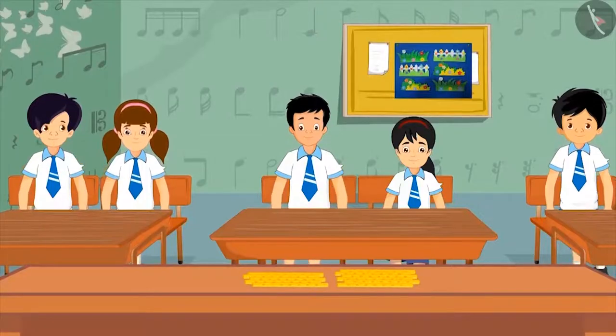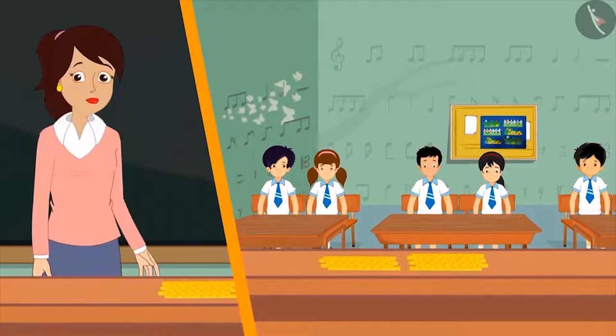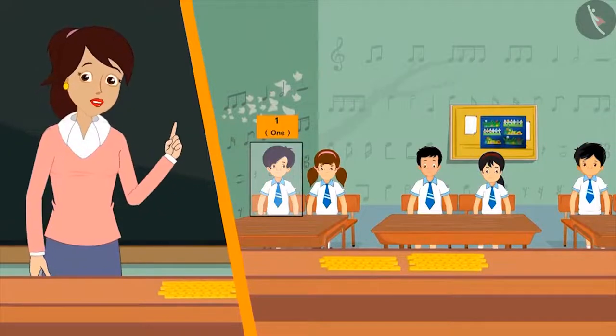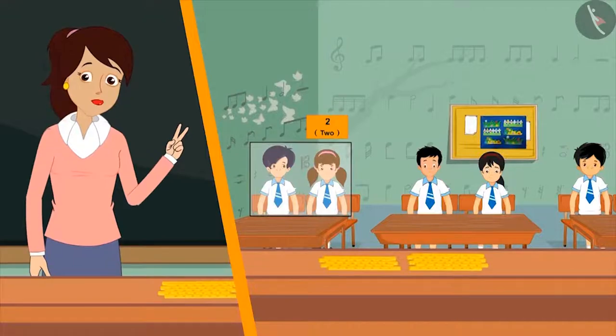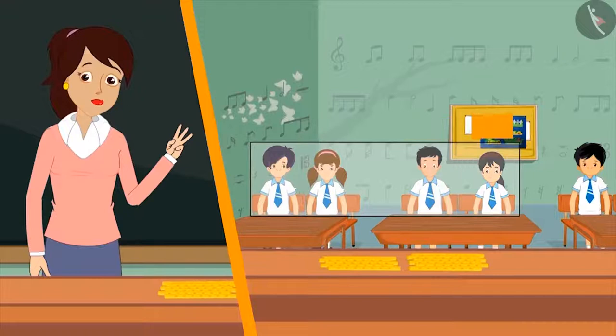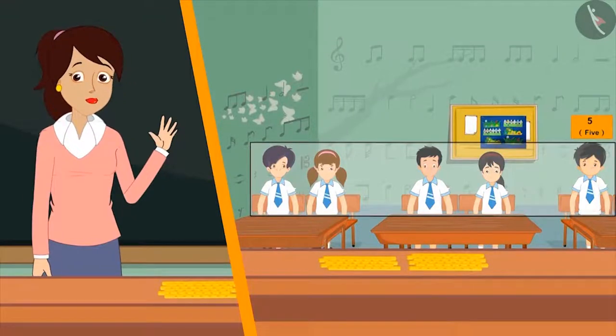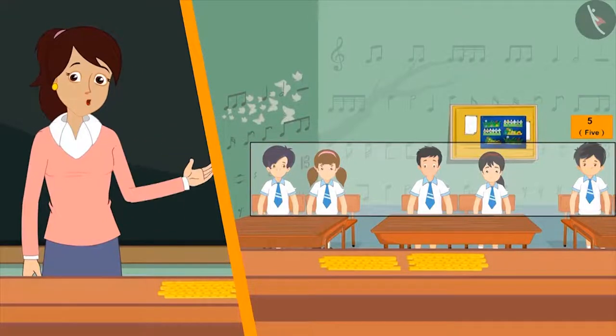To find out the number of children in the class, she makes the children stand in a row and starts counting them one by one. So he is 1, she is 2, he is 3, she is 4, and he is 5. There are 5 children in the class today.